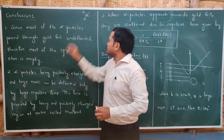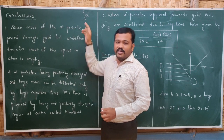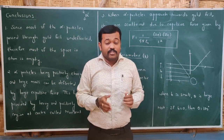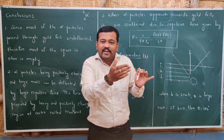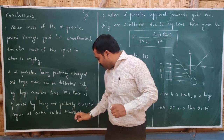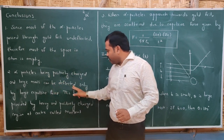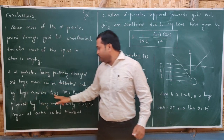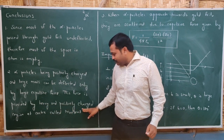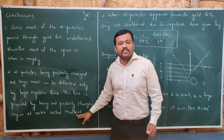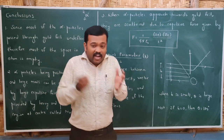The second conclusion: alpha particles are nothing but helium nuclei with charge 2 and mass 4 amu. Since alpha particles are positively charged and heavy, and they are scattered, there must be something in the atom that is positively charged and has a heavy mass to deflect them. That region is therefore called the nucleus. Alpha particles can be deflected only by a large impulsive force provided by this heavy, positively charged region — the nucleus.